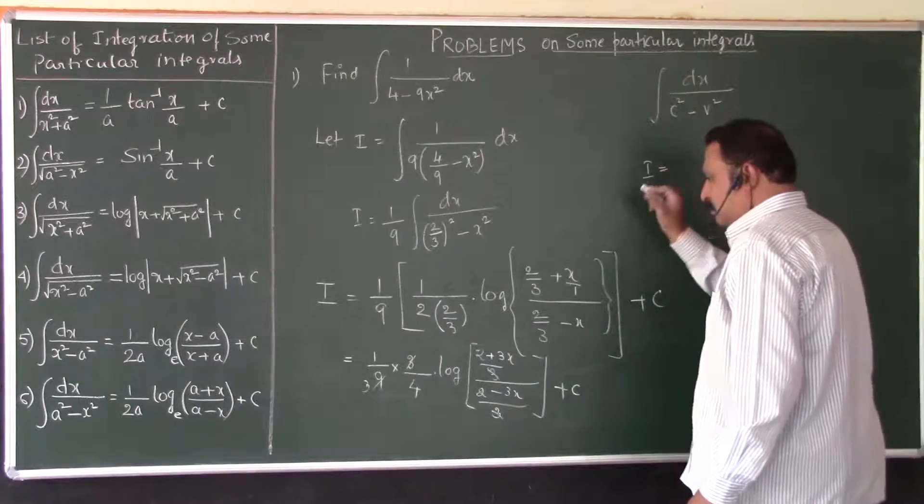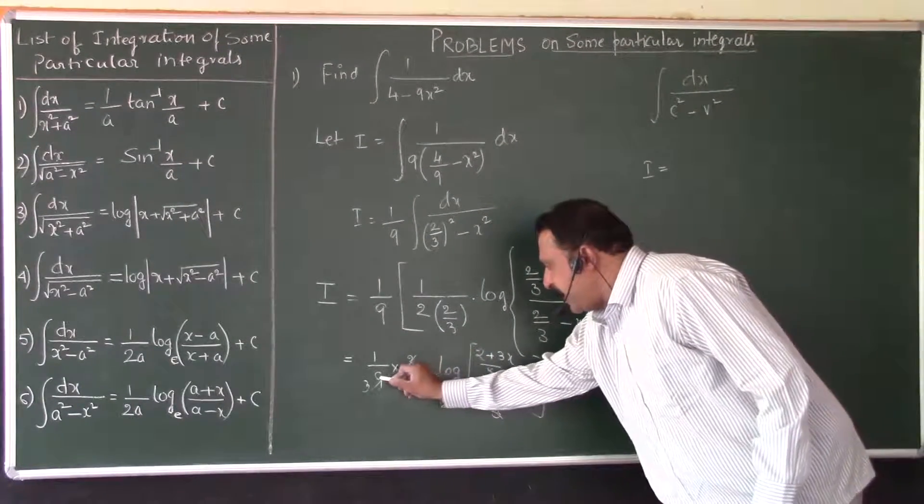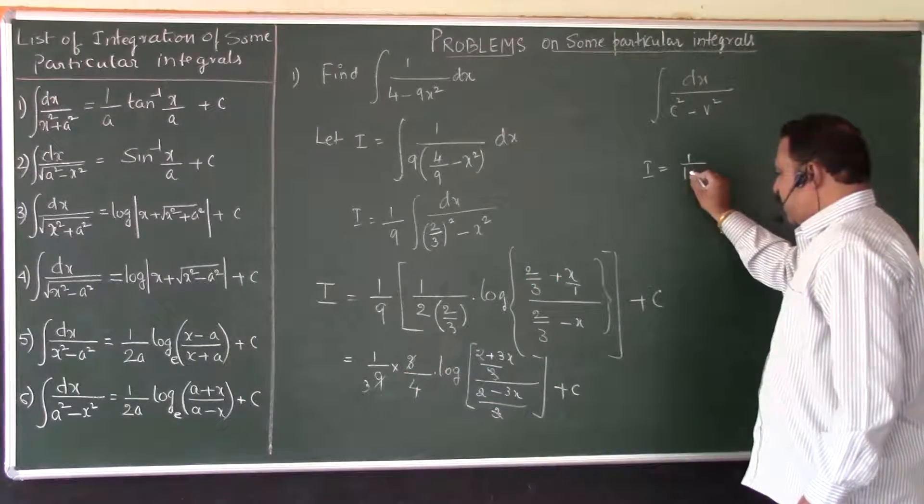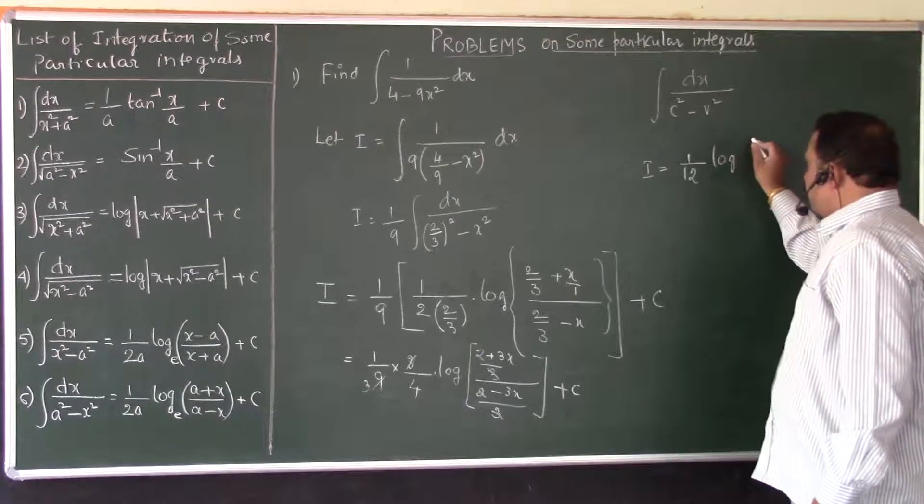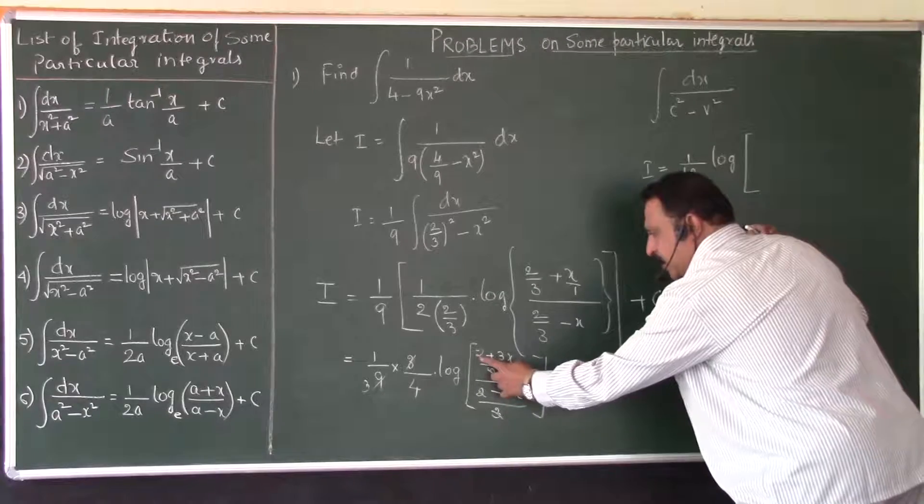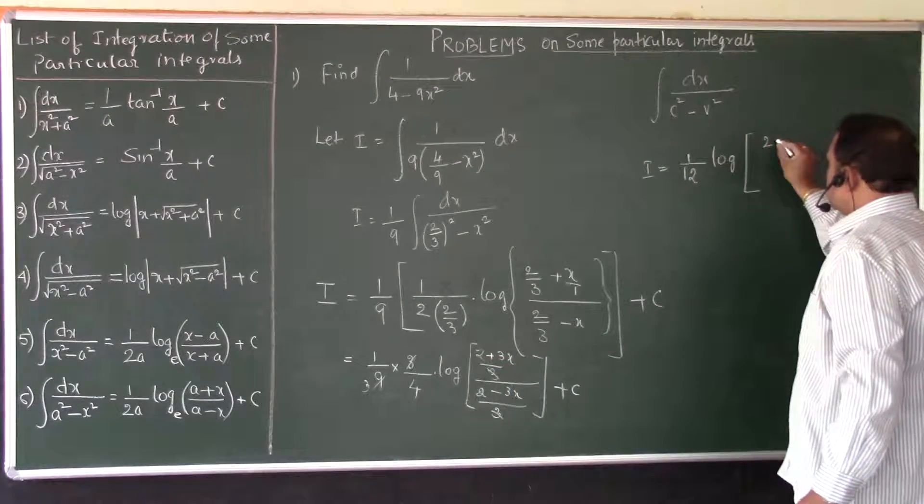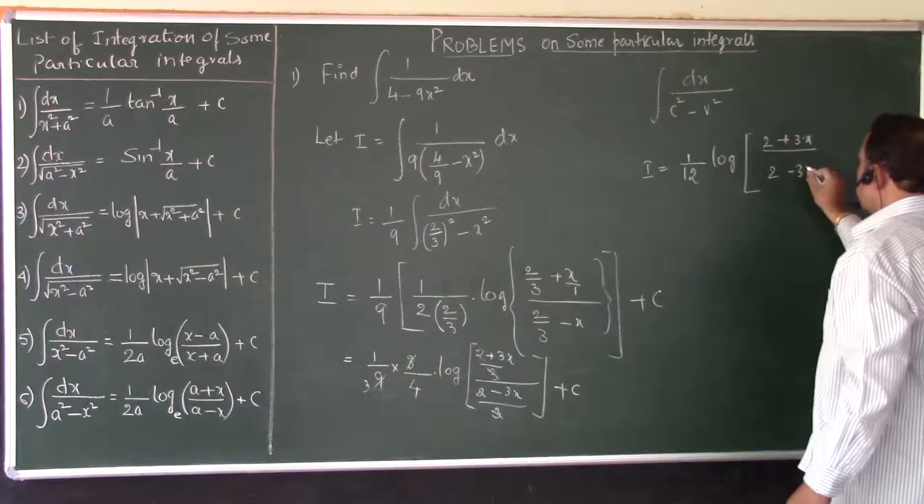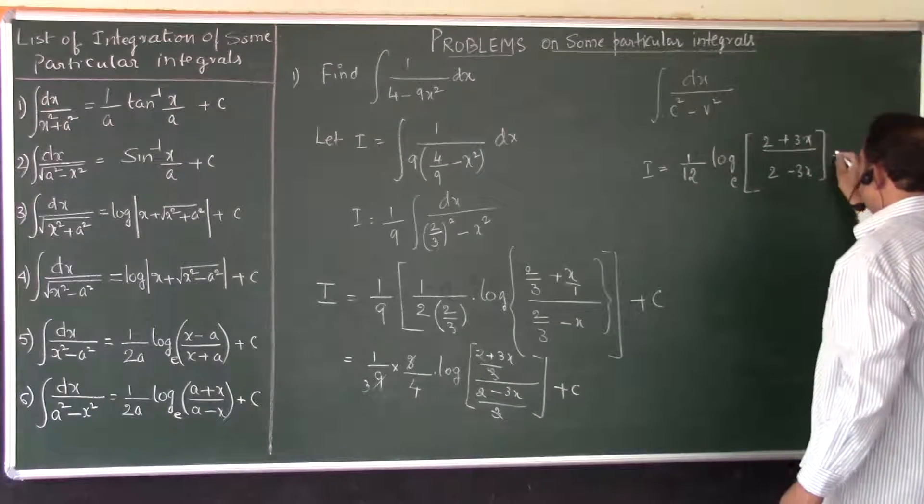So I is equal to, I will cancel this 3 and 9. 3 into 4 is 12. So 1 by 12 into logarithm of, now cancel this 3 and 3. So 1 by 12 into logarithm of 2 plus 3x over 2 minus 3x to the base E plus C.